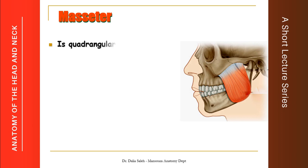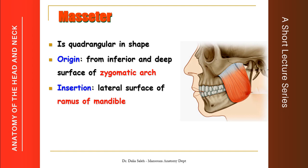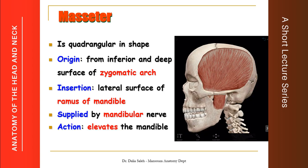The masseter is a quadrangular muscle. It originates from the inferior and deep surfaces of the zygomatic arch and inserts into the lateral surface of the ramus of the mandible near the angle. It is supplied by the mandibular nerve through masseteric branches, and its action is to elevate the mandible.